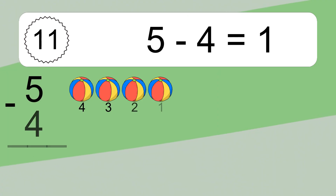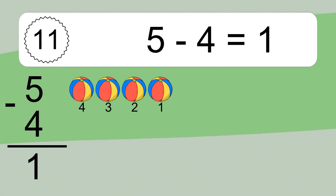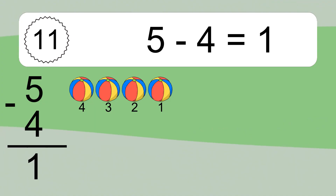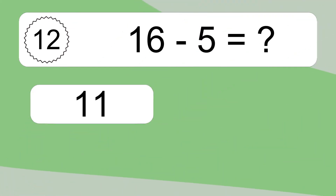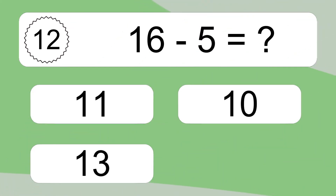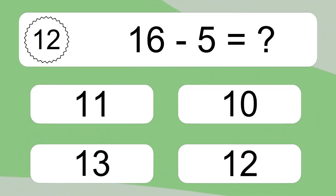5 minus 4 equals 1. Let's count it: 4, 3, 2, 1. 16 minus 5 equals what?